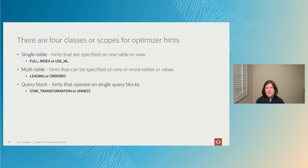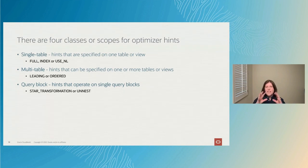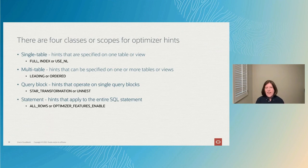The third category is query block hints — hints that operate on a single query block. A query block is a unit of SQL, so if you have a query containing a subquery or inline view, those are treated as separate query blocks from the outer query. The fourth and final category is statement-level hints — hints used for the entire SQL statement, typically controlling things like the optimizer mode or which optimizer features will be enabled for that query.